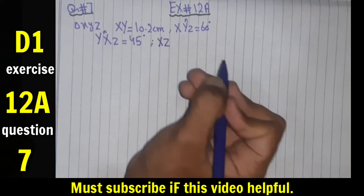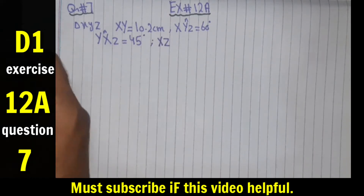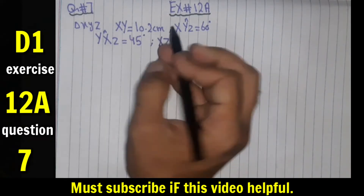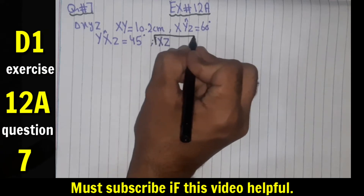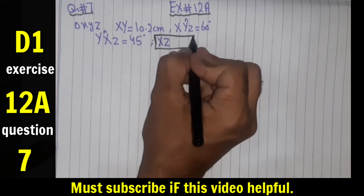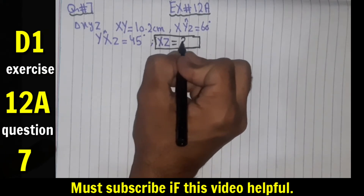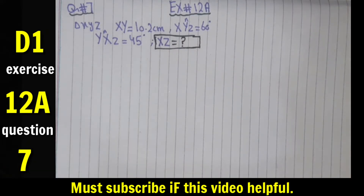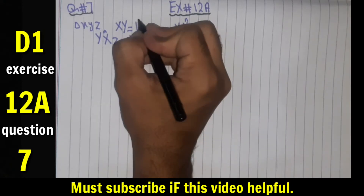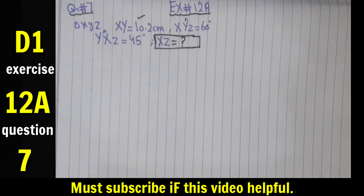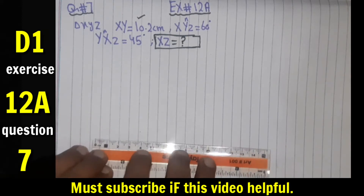XZ is unknown. Okay students, let's start and construct this triangle. First, I'll draw a line segment XY of 10.2 cm using a scale.